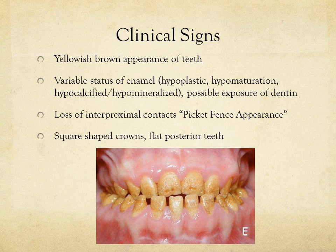Patients may also have inflamed or sensitive gingiva. Clinical signs include a yellowish-brown appearance of the teeth, variable enamel status — either hypoplastic, hypomature, hypocalcified, or hypomineralized phenotype — and possible exposure of dentin leading to sensitivity. There will also be loss of interproximal contacts giving a picket fence appearance, and square-shaped crowns.